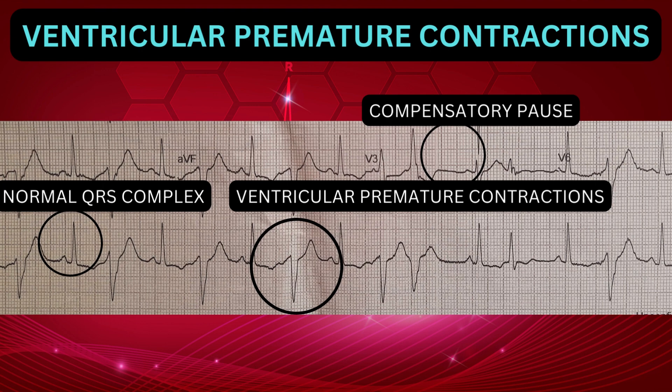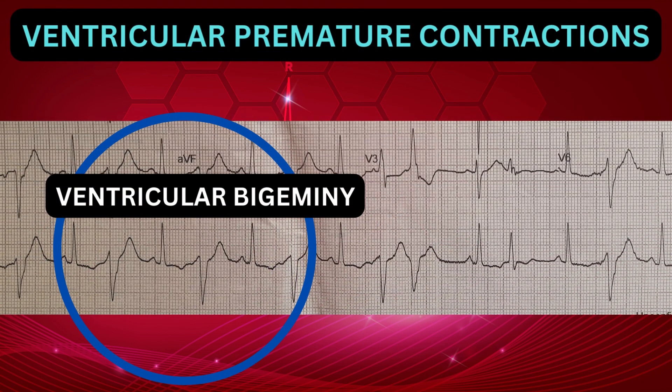In ventricular premature contraction, the heartbeat is initiated by the Purkinje fibers rather than the sinoatrial node. They can occur in isolation or in repeated patterns, with three or more consecutive PVCs being classified as ventricular tachycardia. In ventricular bigeminy, as seen in this ECG challenge, each normal QRS complex is followed by a premature ventricular contraction.